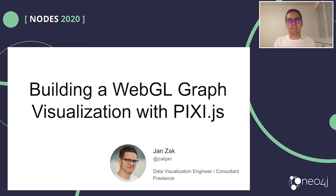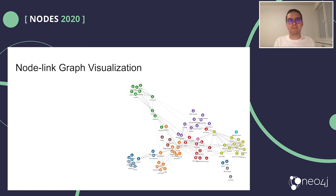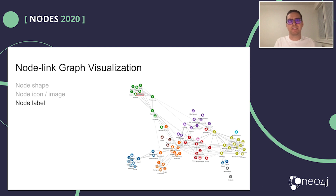Imagine that you want to draw a node-link graph. Depending on the use case, there are a few fundamental objects. There is node shape — it can be a circle, square, or any other polygon. There is node icon or image, which helps you to visually identify a node or node type. There is node label to identify the node — it can be an ID, a name, or any other string describing the entity. And lastly, there are edge lines to represent graph relationships.